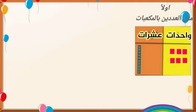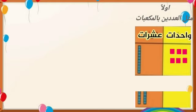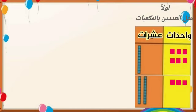تعالوا لنرى كيف يمكننا جمع هذين العددين. أولاً نمثل كل من العددين بالمكعبات. كم قصة خيالية؟ ستة عشر، نضع ست مكعبات في منزلة الآحاد والعشرة في منزلة العشرات. ما عدد الكتب؟ ثلاثة وعشرون، ثلاث مكعبات في منزلة الآحاد واثنان في منزلة العشرات.